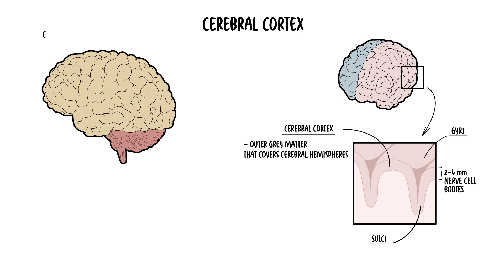The cerebral cortex is distinct from the cerebrum, the forebrain. The cerebrum describes the two cerebral hemispheres — the right and the left.